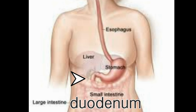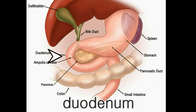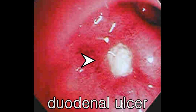The duodenum is a portion of small intestine that connects the stomach to the colon. The first portion of small intestine, measuring approximately 30 cm, is called the duodenum. The duodenal ulcer forms when the lining of the small intestine is eroded and a cradle-like ulcer is formed in the duodenum.